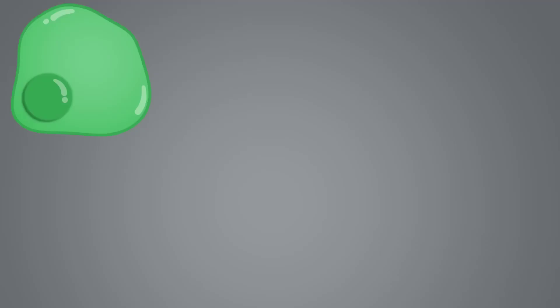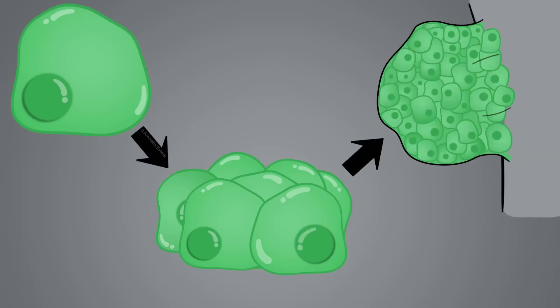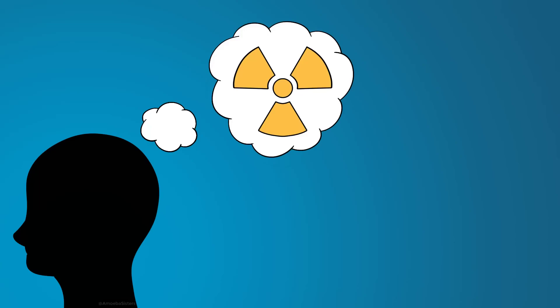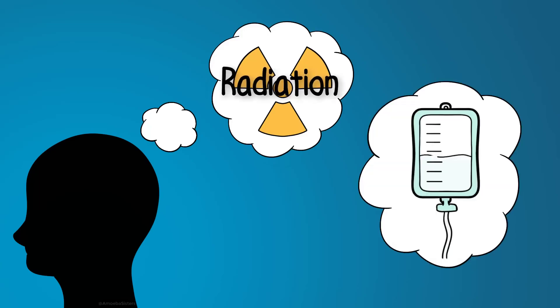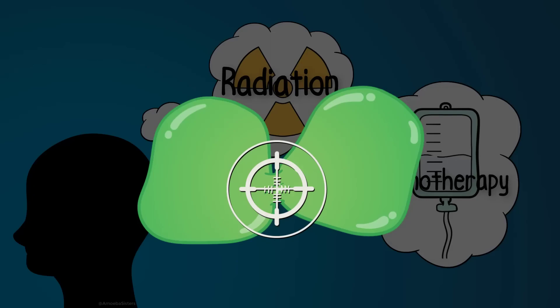The uncontrolled growth that cancer cells have gives rise to more cells like them, which can develop into a tumor. Some tumors stay put, but some do not. Now, the good news is that scientists continue to develop better treatments which include destroying the cancer cells with radiation or medication such as chemotherapy which will target cells that divide frequently.